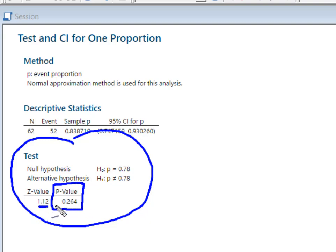Minitab automatically doubles the p-value for a two-sided test with the alternative as not equal to. We've got a p-value of 0.264, and we're going to hang on to that piece of information for a minute.